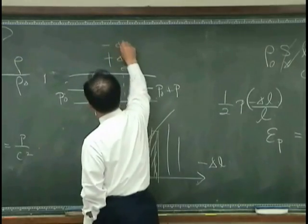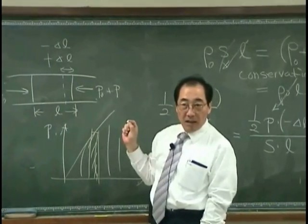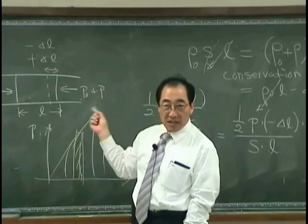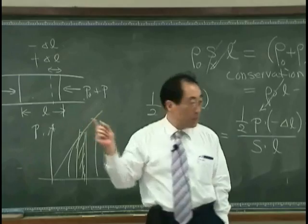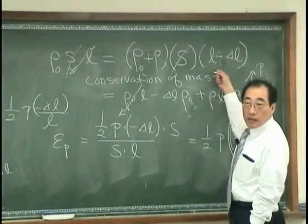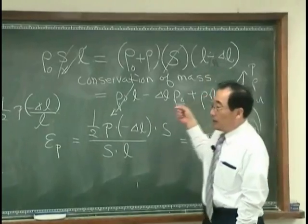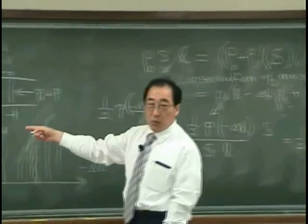So this is minus delta E? Plus. And this is plus. Minus? Then we will have minus potential energy.